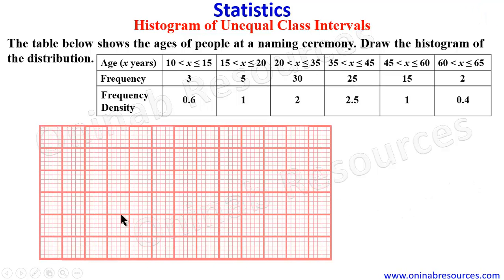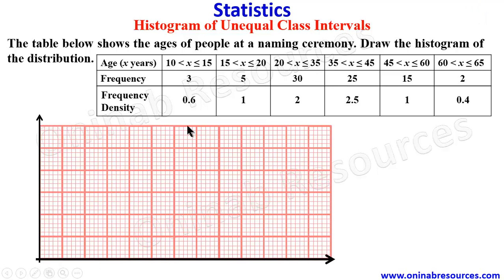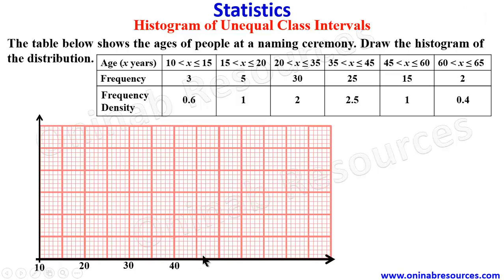For the histogram we draw the horizontal axis and the vertical axis. For the calibration on the horizontal axis, we have the ages. Taking 2 centimeters to 10 units, starting from the first class interval — 10, 20, 30, 40, 50, 60, and 70. Though we are stopping at 65, there is a need to always have a little extra.